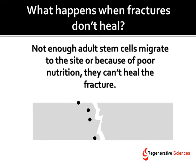What happens when fractures don't heal? Either not enough adult stem cells migrate to the site, or because of poor nutrition they can't heal the fracture. In this case, fewer stem cells go into the site — these are your own adult stem cells — and they're differentiating into bone-producing cells, but there aren't enough of them to get the site to heal. That's a fracture nonunion, or in medical terminology, an inability to form a union or healing of the bone.